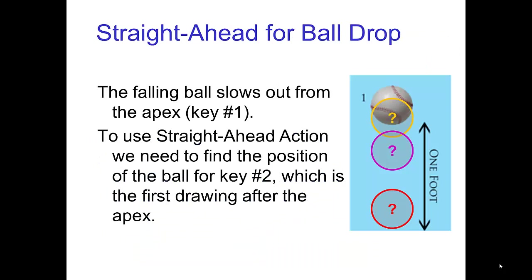To animate a falling ball, you would start at the apex, which is key number one. To use straight ahead action, we need to find the position of the ball for key number two, which is the first drawing after the apex. Of course, this position depends on the number of frames between key number one and key number two.